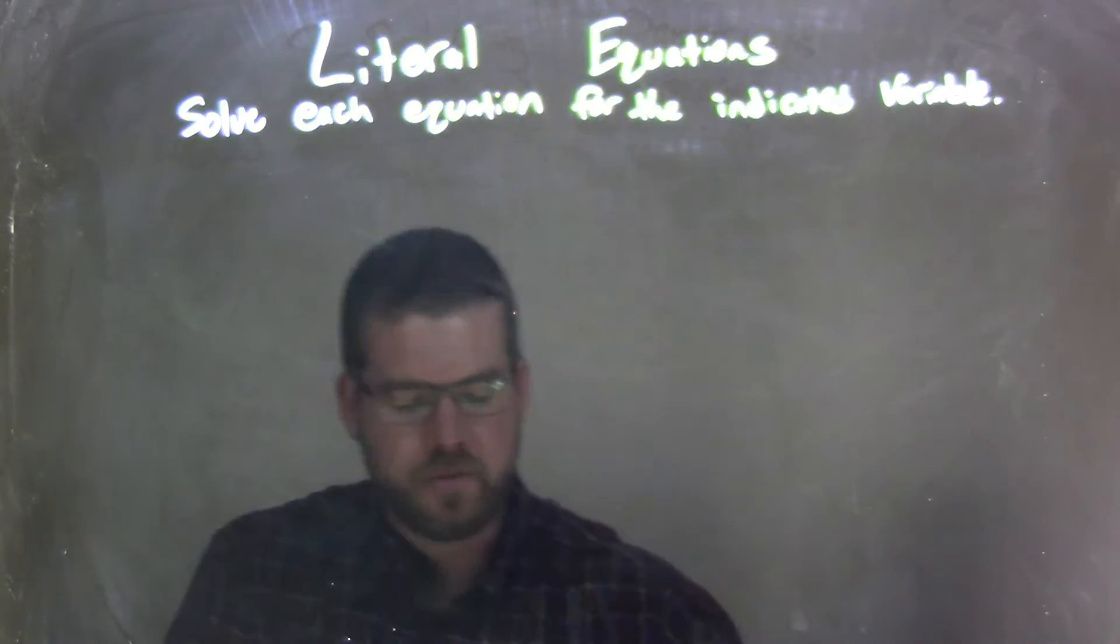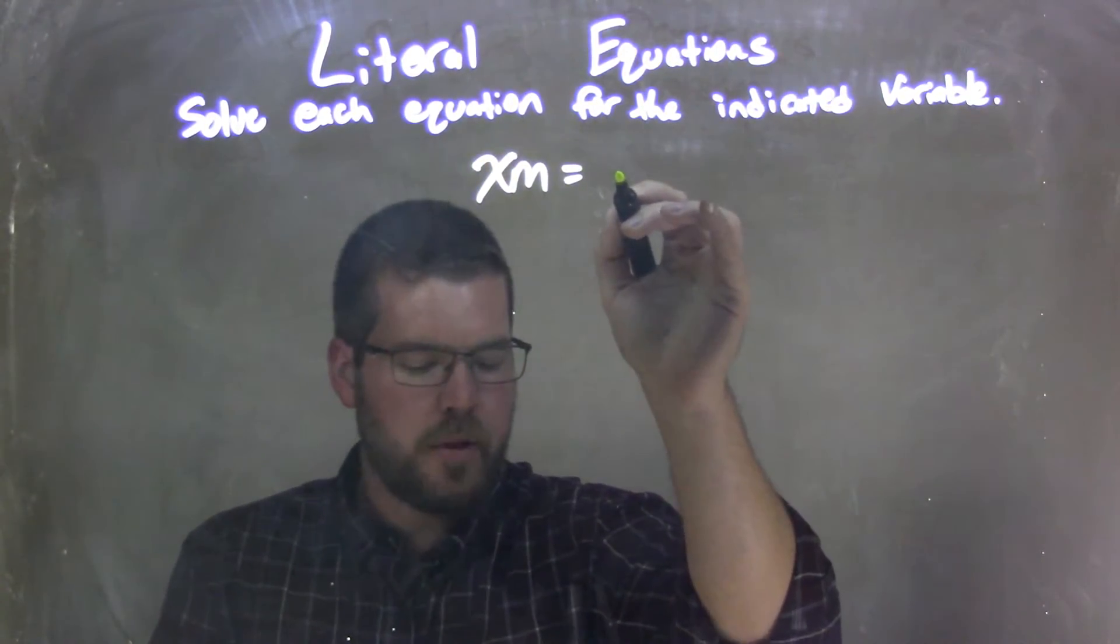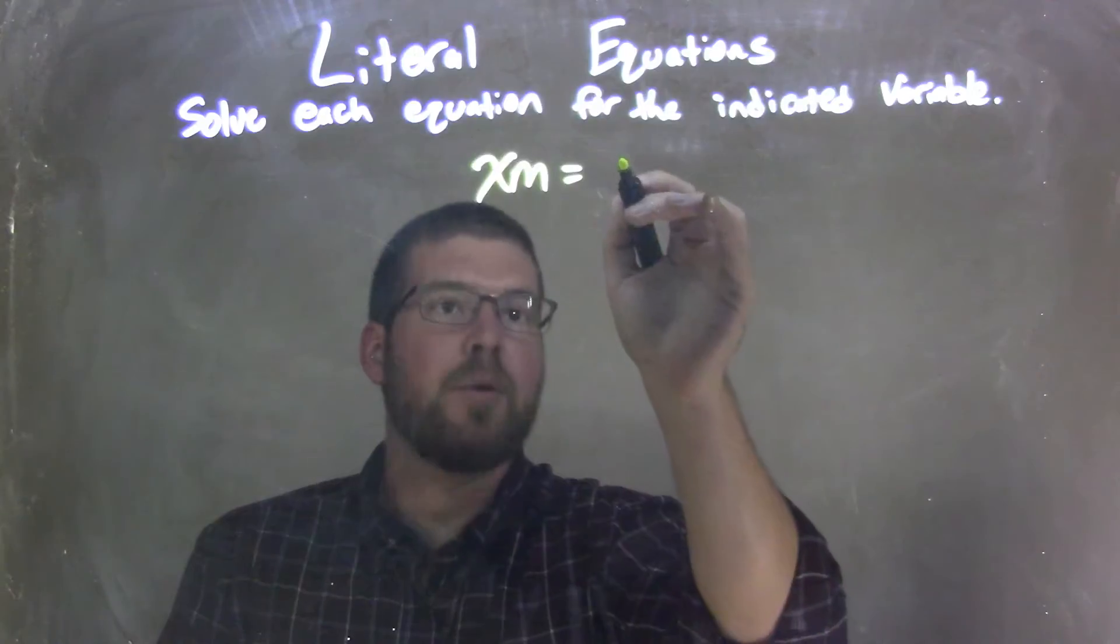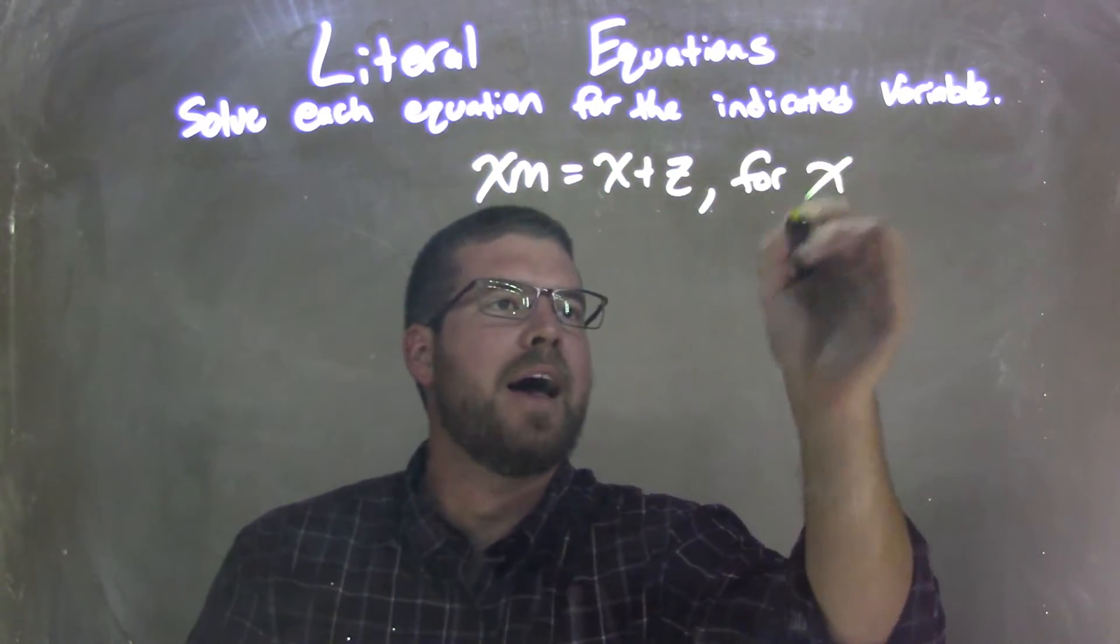So if I was given this equation, xm, not the radio, just x times m, equals x plus z, and we're going to solve that for x.